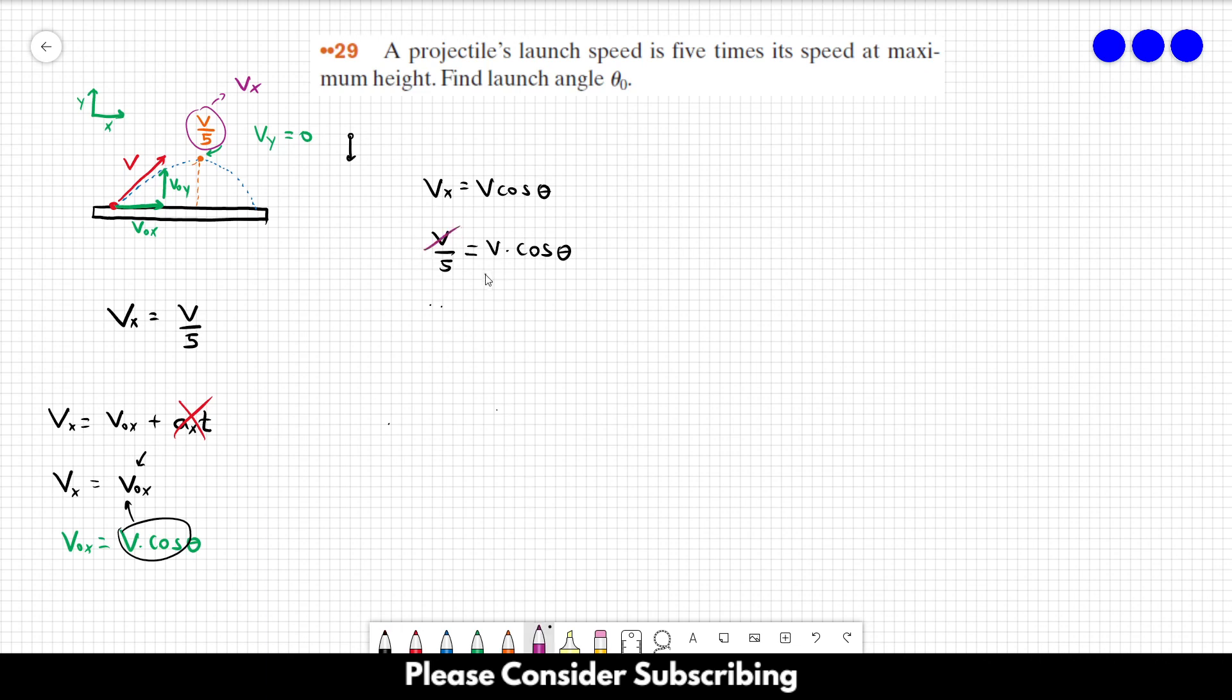So we can cross out V. And then we find that the cosine of the angle is equal to 1 over 5. So the angle is equal to the inverse function of the cosine. Cosine to the minus 1 of 1 over 5. And this gives us 78.5 degrees. So that's the answer of this exercise.